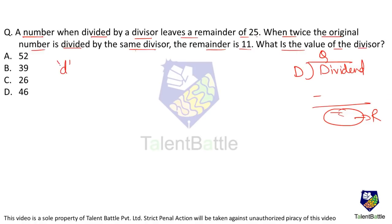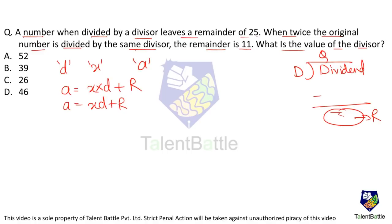Let the divisor be D, the quotient be X, and the dividend be A. So A = XD + R. Since A divided by D leaves remainder 25, we have A = XD + 25. When twice the original number, 2A, is divided by D — that gives 2(XD + 25) / D.